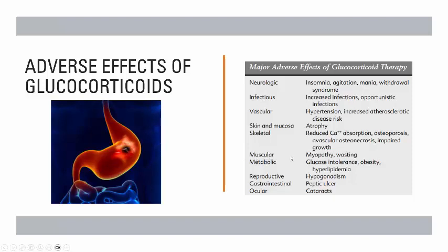On the muscular system, myopathy and muscular wasting can occur. On the metabolic system, there would be chances of glucose intolerance, obesity, and hyperlipidemia. On the reproductive system, there would be chances of hypogonadism. On the GIT, peptic ulcers may develop, and on the eyes, there would be chances of having cataracts.